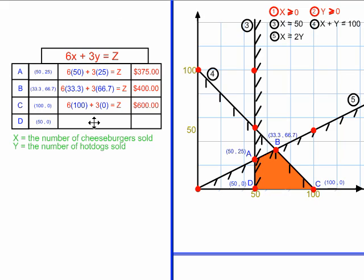And finally, in vertex D, I'm replacing the x and y with 50 and 0. And I get 6 times 50 plus 3 times 0, and that simplifies to $300.